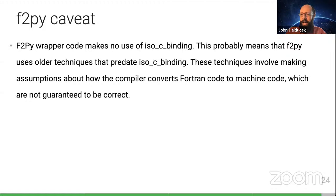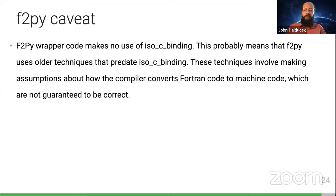There's a question in the chat: is there a way to square a variable without creating an extra copy in memory on the right-hand side? In general, yes. How you do it would depend on which API you're using and how you're using it, but in general that should be possible.